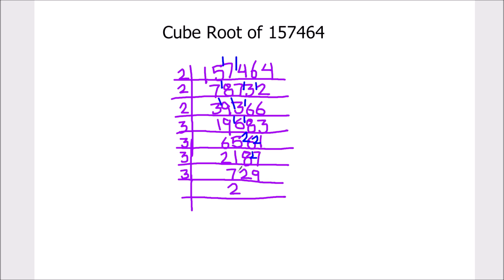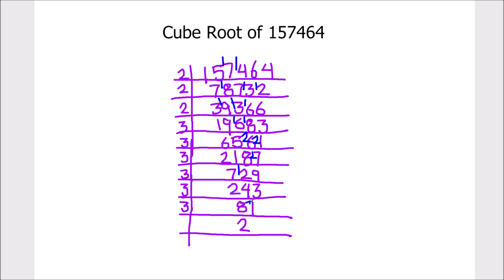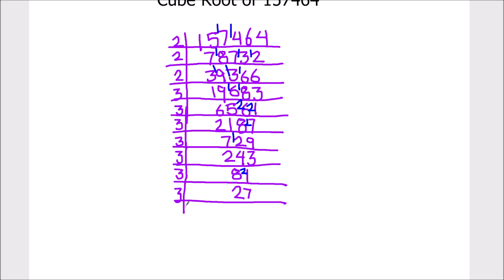Continuing division by 3: 3 times 1 is remainder, this becomes 21, 3 times 7 is 21. 3 times 1 is 3, 3 times 2 is 6, 2 is remainder, this becomes 21, 3 times 7 is 21. Now 3 times 9 is 27, 3 times 3 is 9 and 3 times 1 is 3.